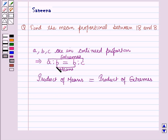Therefore, product of means will be b into b, that is b squared, is equal to product of extremes, that is a into c. So this gives b squared equals ac. This implies b is equal to square root of ac.